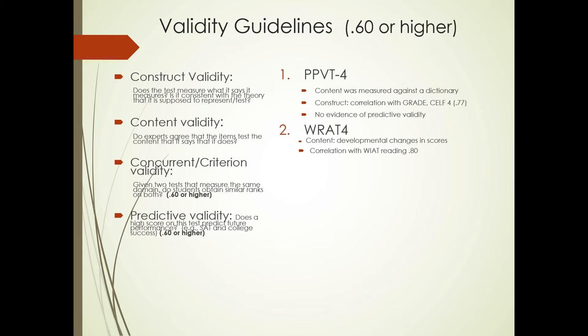The RAT-4. The content validity was established according to the authors by showing that there are developmental changes in scores as students get older in the grades and past school age. Again, that seems reasonable for content that looks at how well the student recognizes words or spell. Its correlation with the WIAT reading subtest, which is a very similar word recognition subtest, was 0.80, so that's a very high correlation.